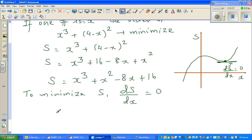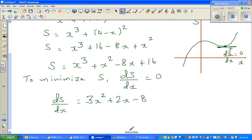So let us differentiate this. dS/dx would be 3x squared plus 2x minus 8, and we're going to let this equal to zero. So therefore, 3x squared plus 2x minus 8 is equal to zero.